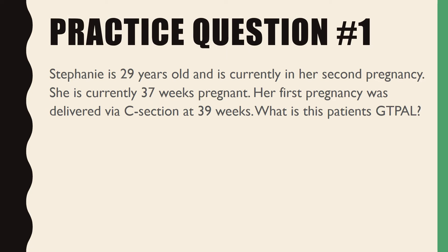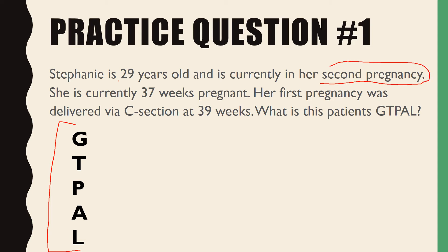Now we're going to run through practice questions. Before starting, I always write out the GTPAL framework — it makes it easier to track. Stephanie is 29 years old and is currently in her second pregnancy. That's our first hint: she's in her second pregnancy, so G is going to be two. She's been pregnant once before, and this is her second pregnancy — it's literally in the question. She is currently 37 weeks pregnant.